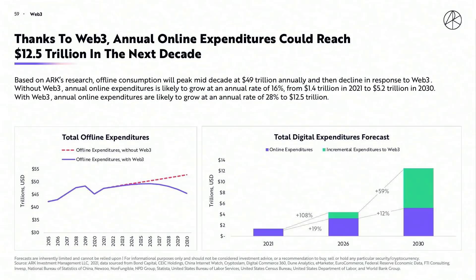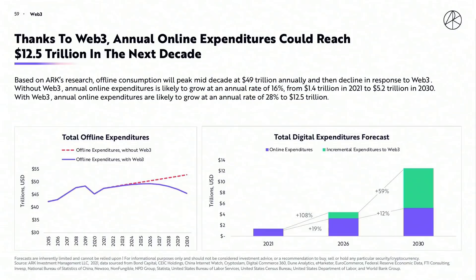At the margin, it's going to be decisions like: I don't want to buy that in the real world — I'd rather buy a digital equivalent in this virtual world I already spend hours and hours a day in. Web3 adoption could make online annual expenditures roughly $12.5 trillion by the end of this decade, growing at 28% compound annual growth. As you can see in the chart on the left, we could see a peak in offline expenditures as a result of that adoption — with offline spend roughly flattening around $49 trillion by the end of this decade, compared to nearly $55 trillion without Web3. With that, thank you all so much for listening in. It was a pleasure, and you can catch me back on here in about an hour to go over the digital consumer section.